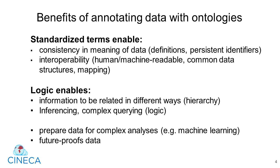Simply put, the benefits of using ontologies to standardize data is that ontology terms provide consistency in the meanings of words, which can be specified by using ontology identifiers. Ontologized data is human and machine readable. The consistent data structure increases interoperability between datasets and databases, and the ability to use synonyms or map between term labels enables users to use the vocabulary they're used to using, while the computer knows they're talking about the same information.